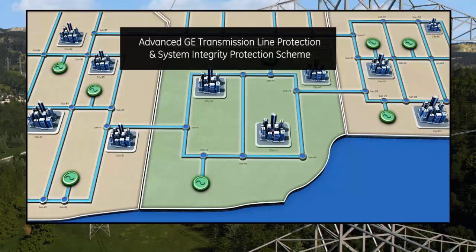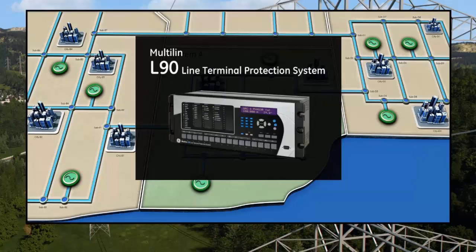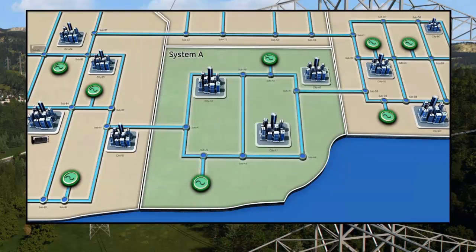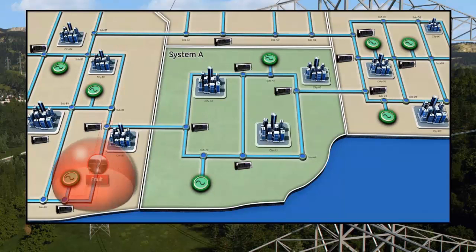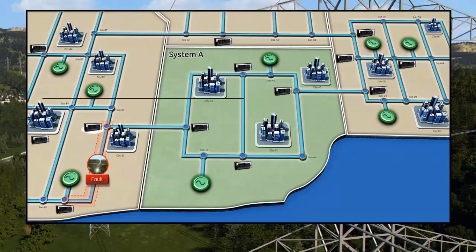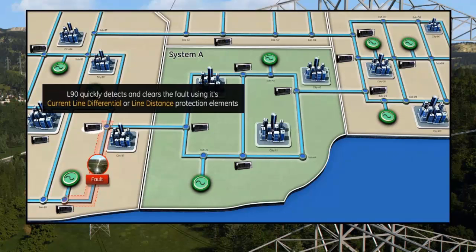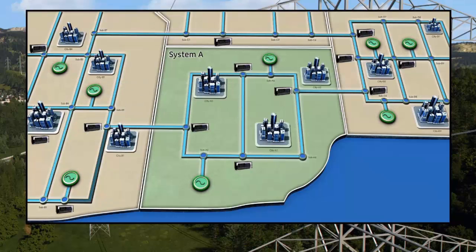Now let's look at how this system would react after System A implements an advanced GE transmission line protection and system integrity protection scheme. GE's multi-lin L90 line terminal protection systems are placed across the power grid monitoring transmission lines for faults. When a phase-to-ground fault occurs on the transmission line, the L90 quickly detects the fault using either its current line differential or line distance protection elements and quickly trips the pertaining line terminals.